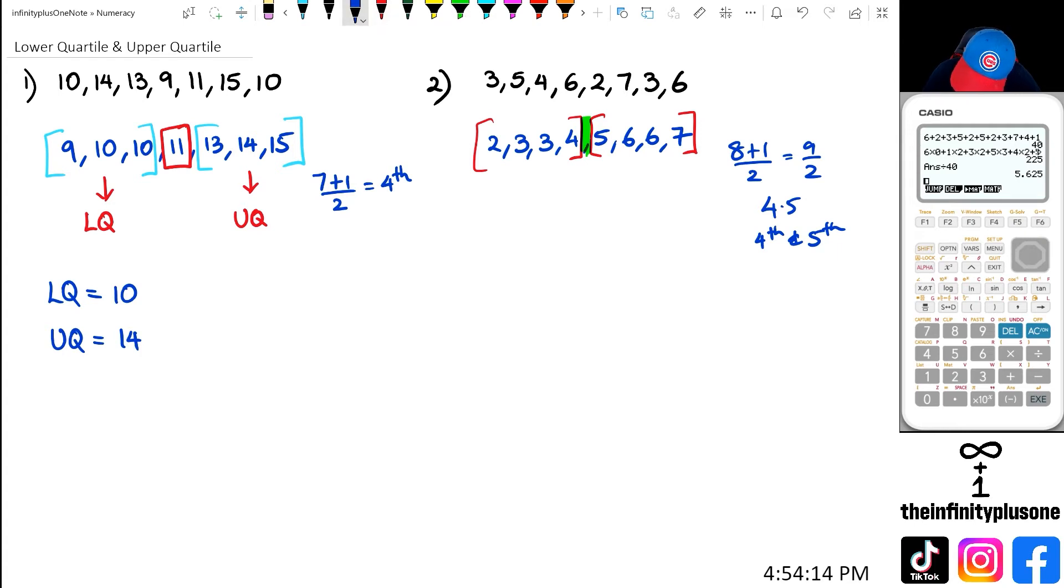four numbers. Now what we've got is 2, 3, 3, 4. We've got four numbers together, and we're going to do 4 plus 1 over 2, which is 5 over 2, which is 2.5. So we're looking for the number between the second number and the third number. But it's kind of obvious when you look at this because we've got four numbers, so the lower quartile is going to be there, which equals 3.